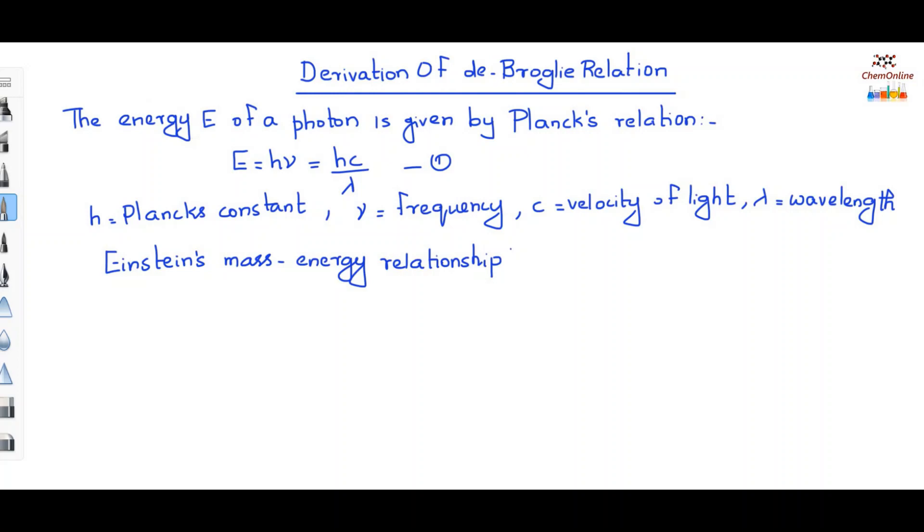According to Einstein's mass energy relation, we have E equals mc square. This will be equation 2, where m is the mass and c is the velocity of light. So, equating equations 1 and 2, we have hc by lambda equals mc square. Or, we can write lambda equals h by mc.